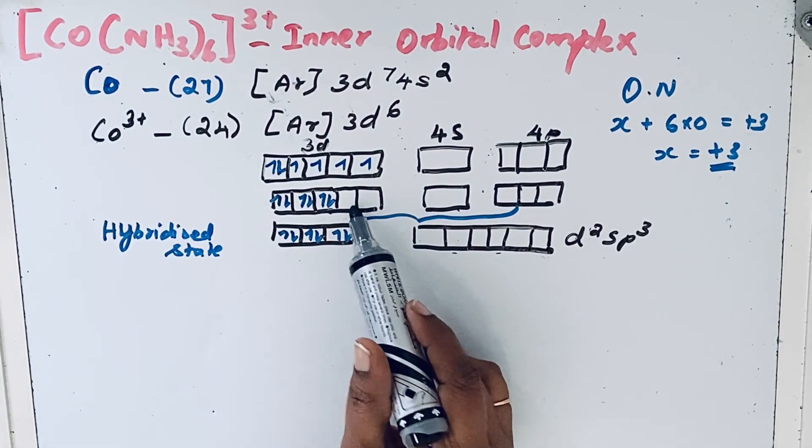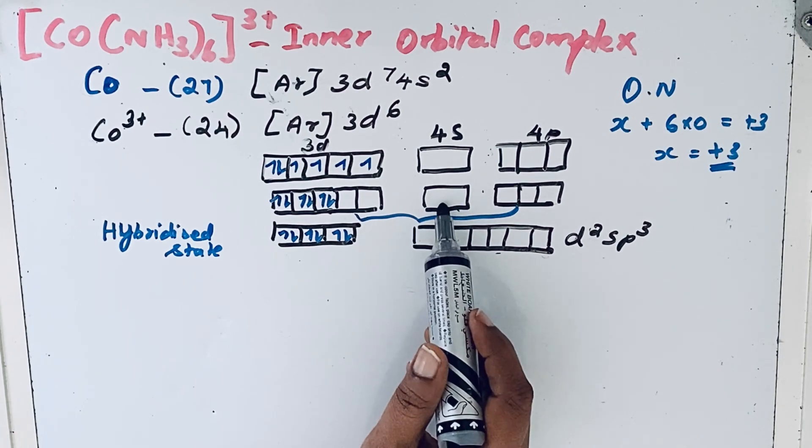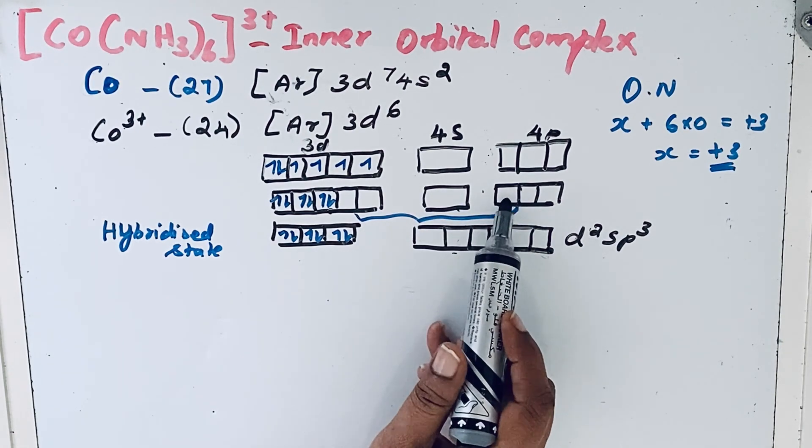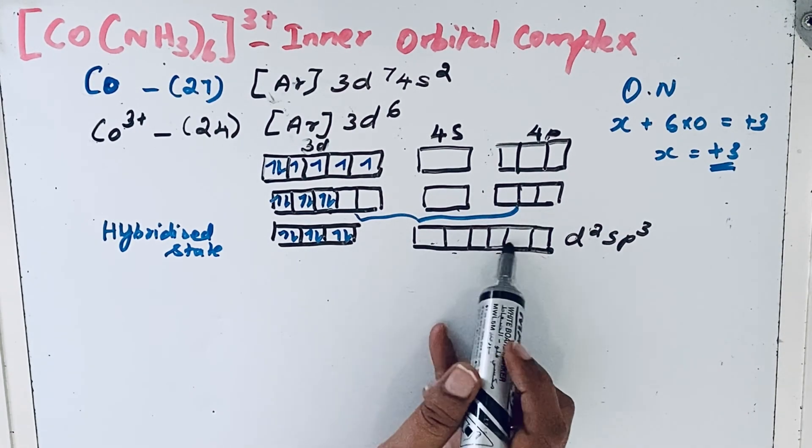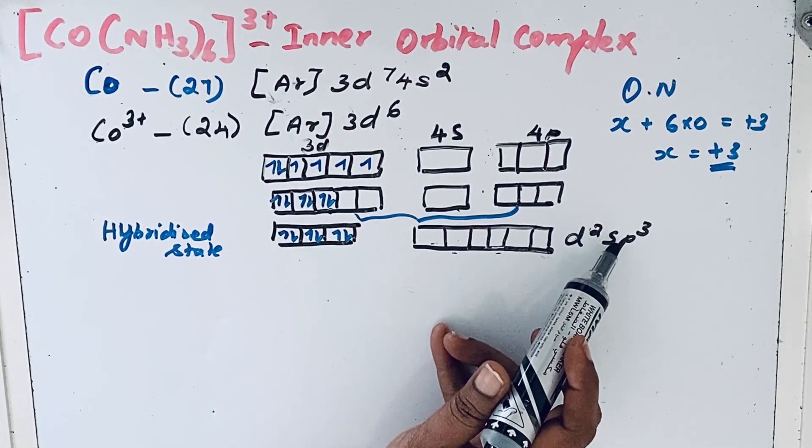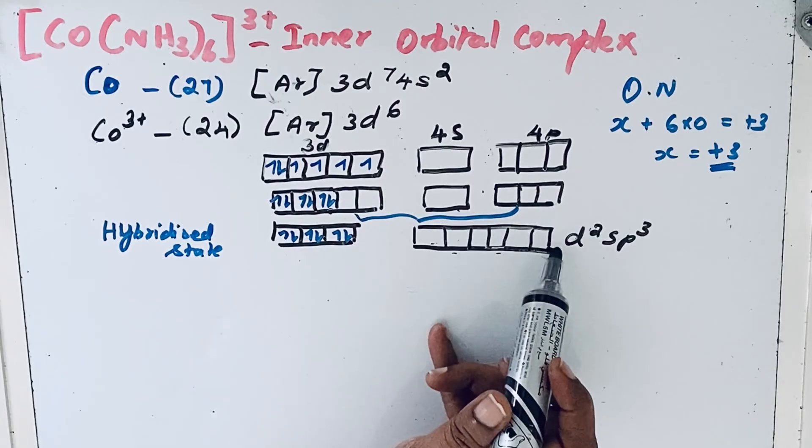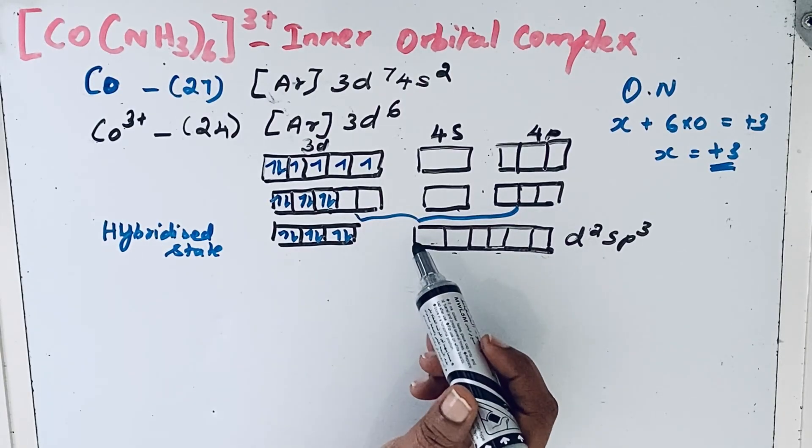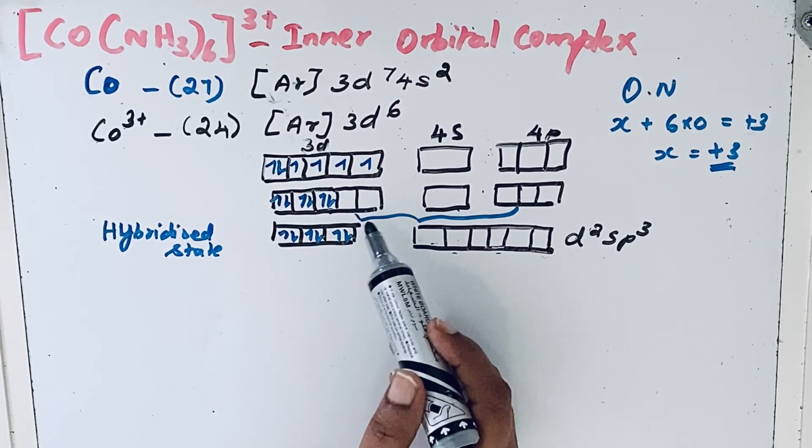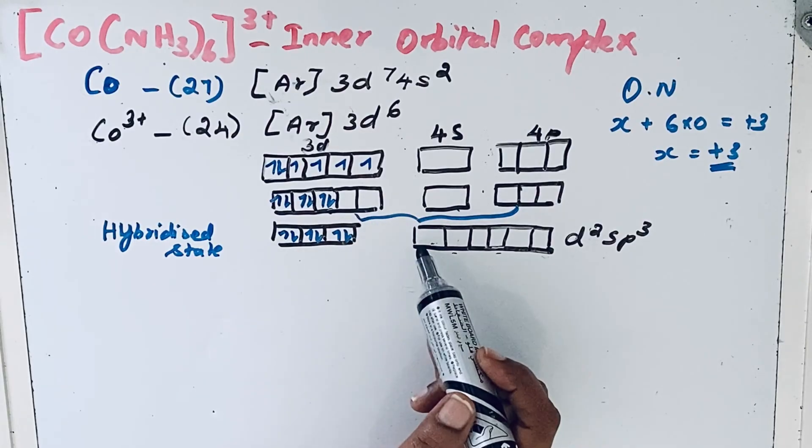Two empty d orbitals, one s orbital, and three p orbitals hybridize and form d2sp3 hybridized orbitals. These d2sp3 hybridized orbitals now receive a pair of electrons for bond formation from the NH3 groups.